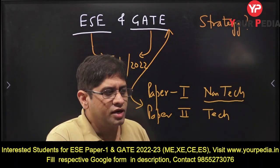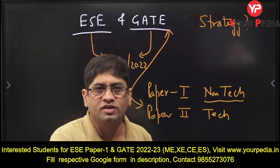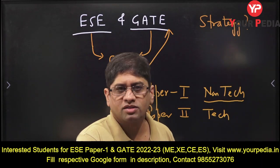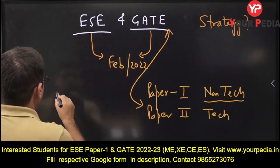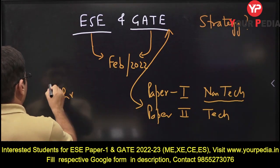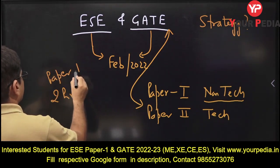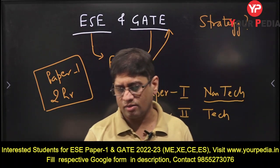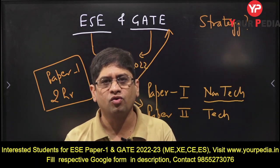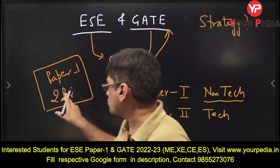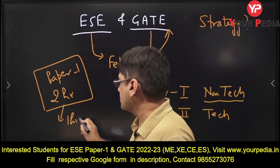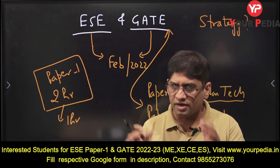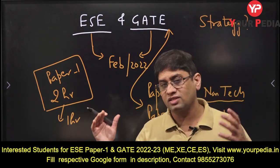The strategy can be like this: you need to fix up some time slot for Paper 1 of Engineering Services. October is going on, so November, December, January, February — these couple of months are left. If you give two hours per day to Paper 1 of Engineering Services every day, and then just before the GATE and preliminary exam — say 10 to 15 days before — you reduce those two hours to one hour and increase the time for technical.